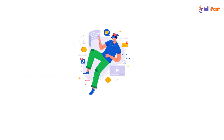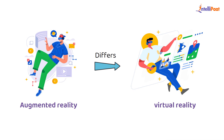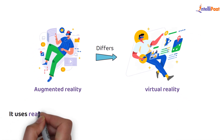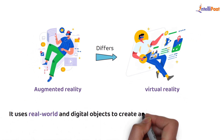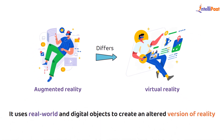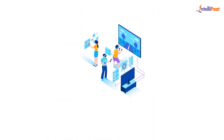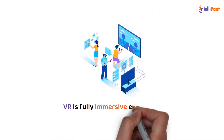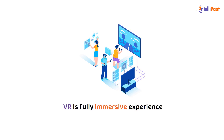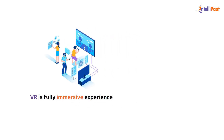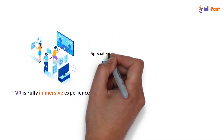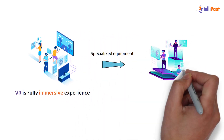Augmented reality differs from virtual reality because it uses real-world and digital objects to create an altered version of reality. Virtual reality is a fully immersive experience within a simulated environment. VR also requires more specialized equipment than AR.